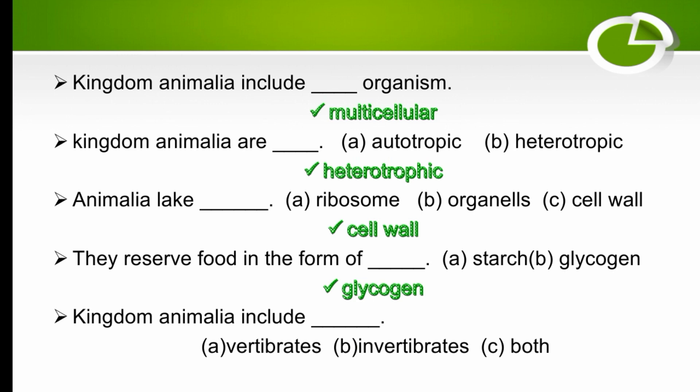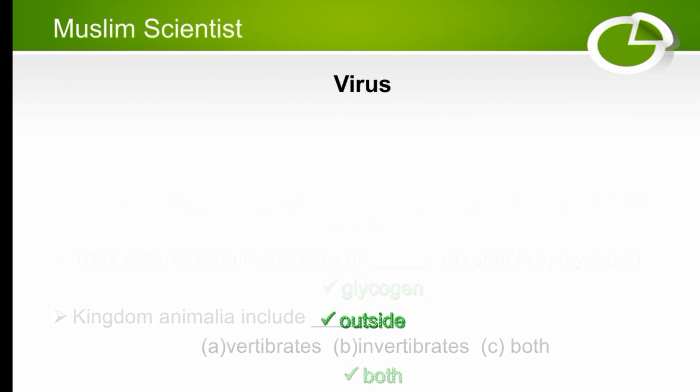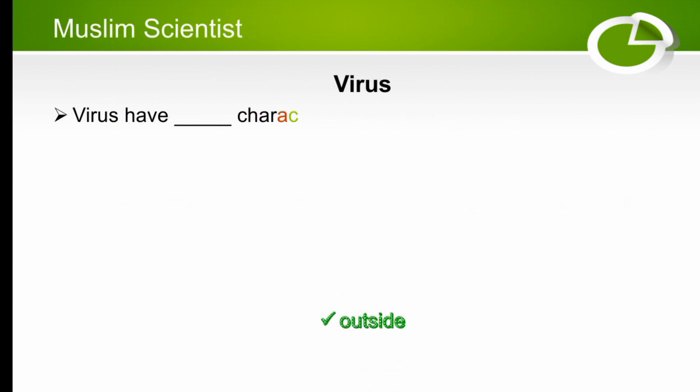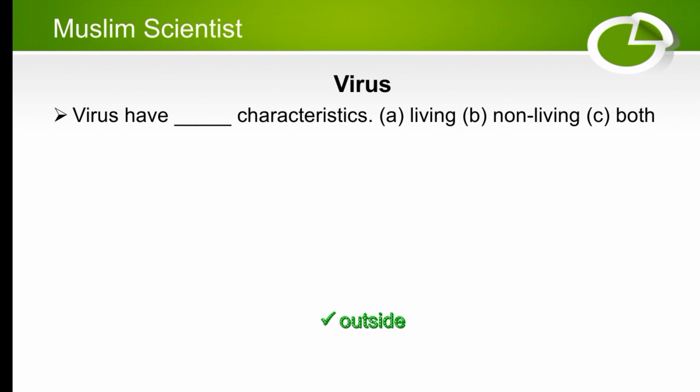Kingdom Animalia includes both vertebrates and invertebrates — the right option is both. Viruses have characteristics of both living and non-living things — virus lies on the boundary line of living and non-living, so the right option is both.